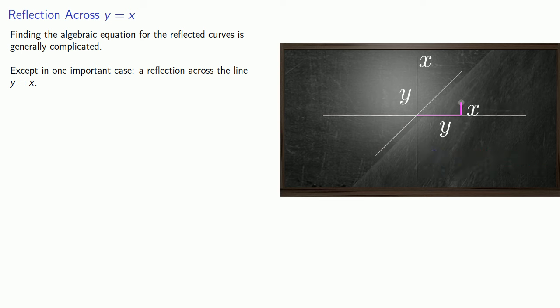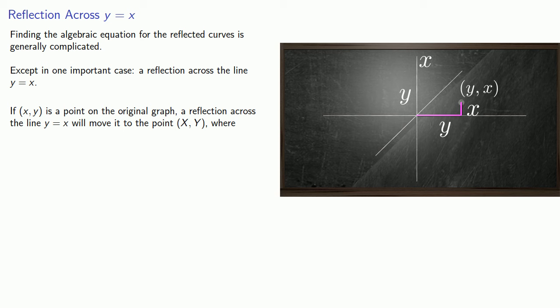So the coordinates of this point are horizontal distance y and vertical distance x. So the coordinates are (y,x). And so if (x,y) is a point on the original graph, a reflection across the line y equals x will move it to the point where the new coordinates are the old y value and the old x value.